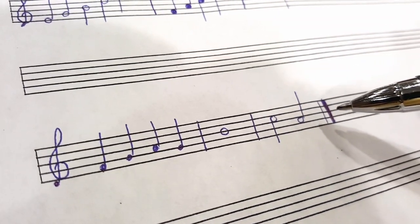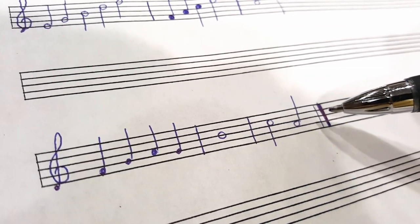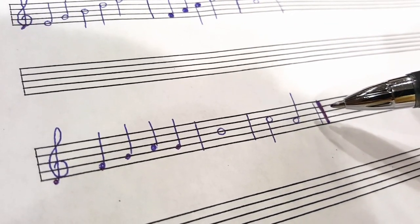When you end a piece of music, you put a thin bar line and then a thick bar line. That indicates the end of that particular piece of music.